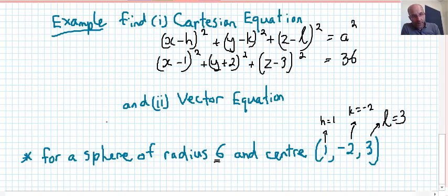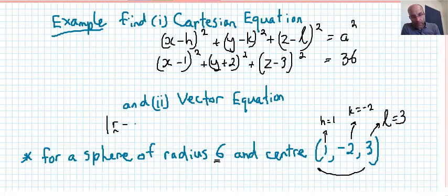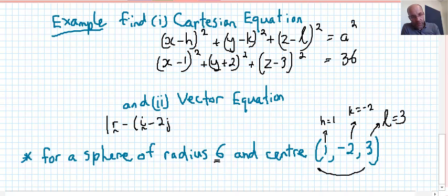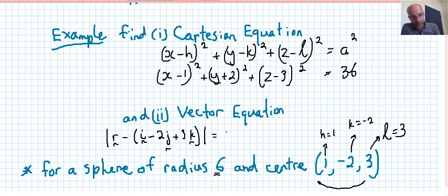The vector equation is such for a certain vector r. We have to come up with the position vector. So the position vector, based on that center, would be r minus, use brackets, 1i minus 2j plus 3k. Magnitude equals a, which is the radius, which equals 6. So the vector equation is the magnitude of r minus i minus 2j plus 3k equals 6.